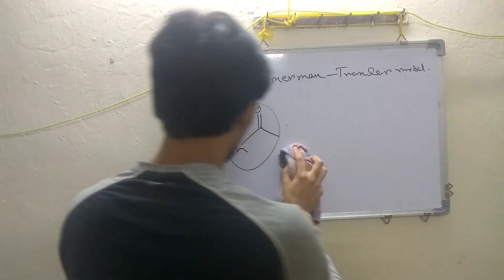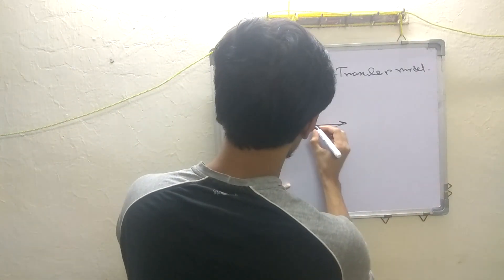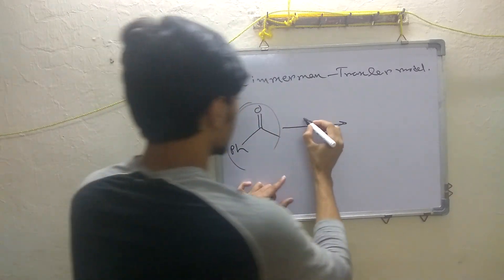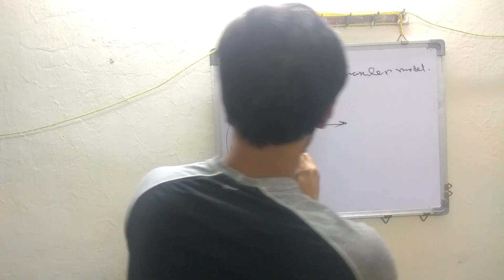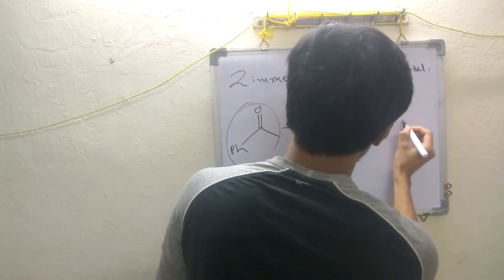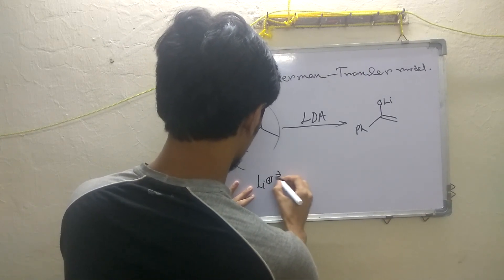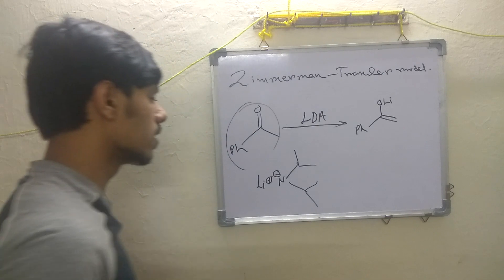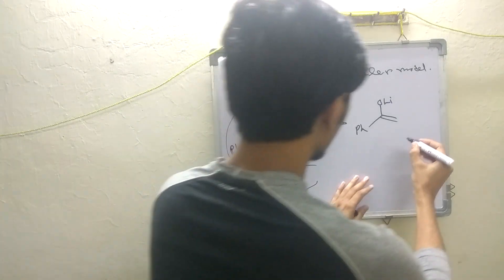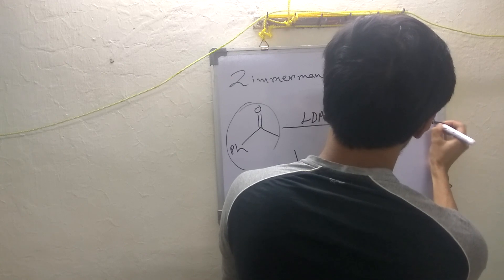To make the reaction selective, you will first convert the ketone to its enolate completely by treating it with a very strong base. The base generally used is LDA — lithium diisopropyl amide. LDA is a very hindered and very strong base, so your enolate will be formed completely as the lithium enolate.